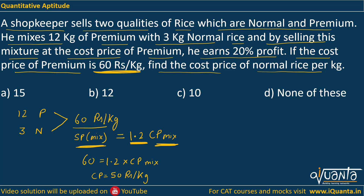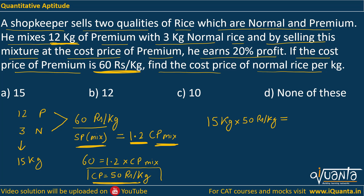Therefore, CP of the mixture = Rs 50 per kg. The total quantity sold is 12 + 3 = 15 kg. So the total cost of the mixture = 15 × 50 = Rs 750. This total CP must equal the sum of the individual costs of the two types of rice.